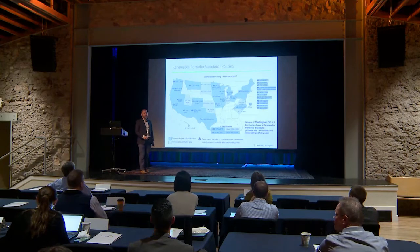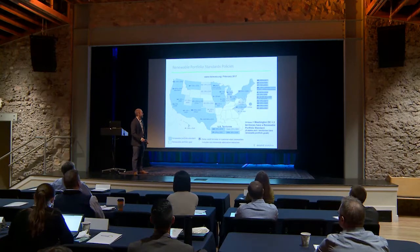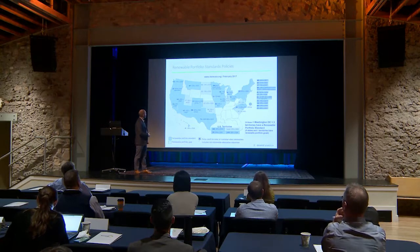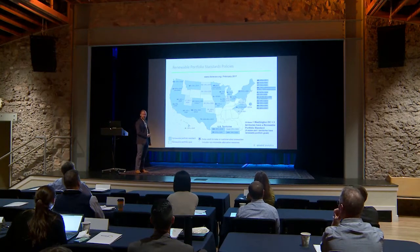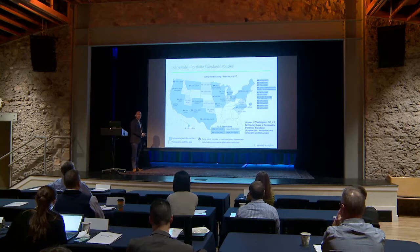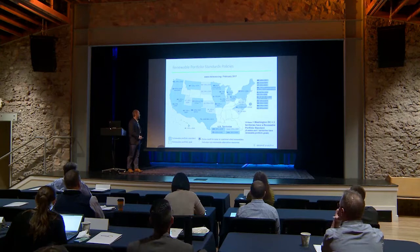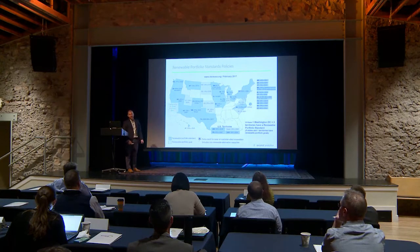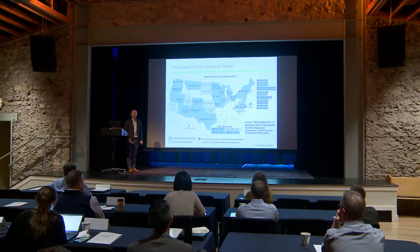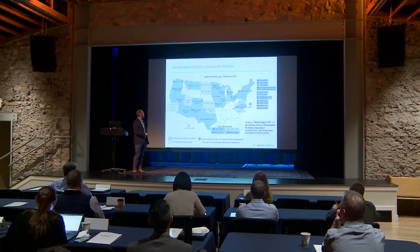Renewable portfolio standards have had a big effect. Looking at a map of the U.S. as of February 2017: California was at 50%, Oregon now 50%, Hawaii at 100% by 2045 — and we helped Hawaii come up with their power supply improvement plan to figure out how to get there. We're probably going to see 100% RPS in California — I would put money on it passing next year in some form, whether 100% renewables or 100% clean energy.